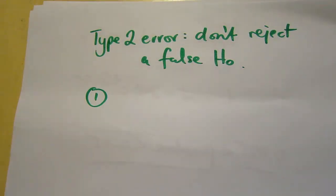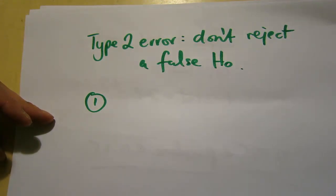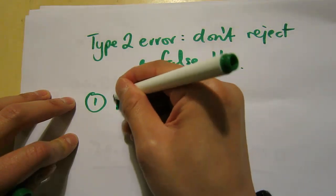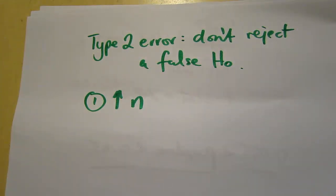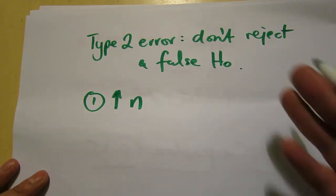The first way is to get more information. So the more information you have when you run a test, the more accurate your conclusions. So how do we get more information? We increase n, our sample size. So you increase your sample size, the more information you have, the less likely you are to make an error.